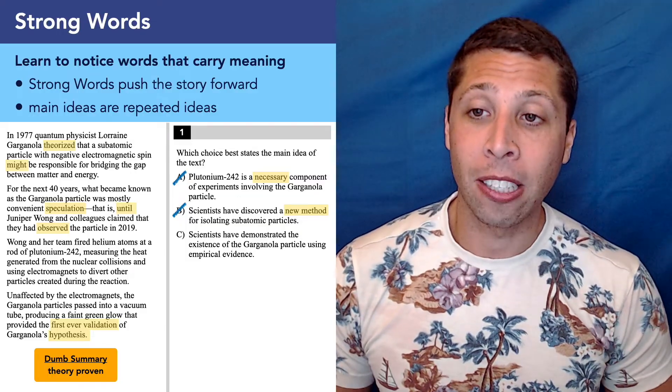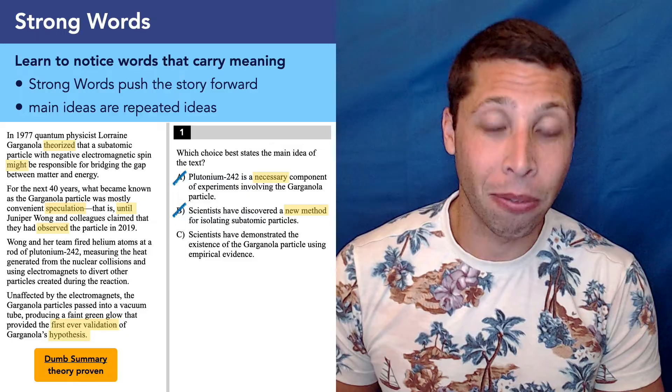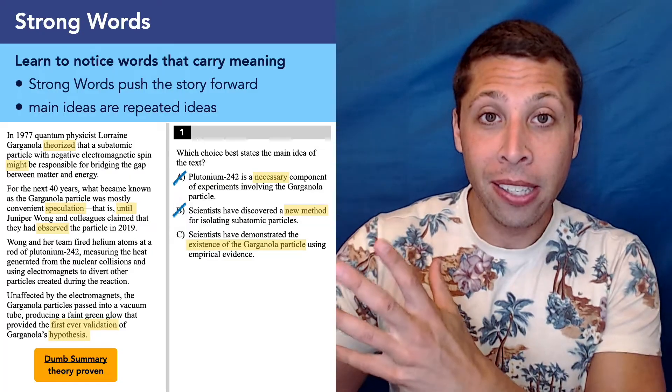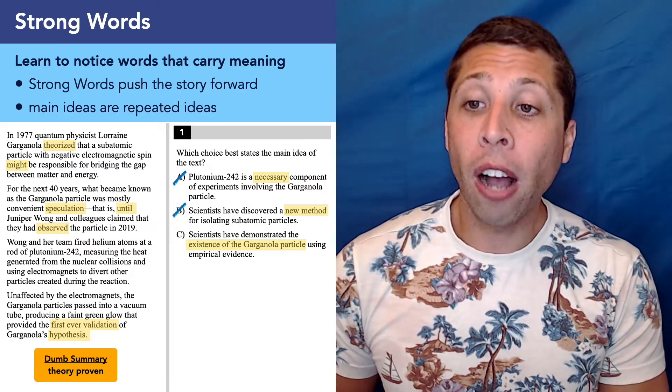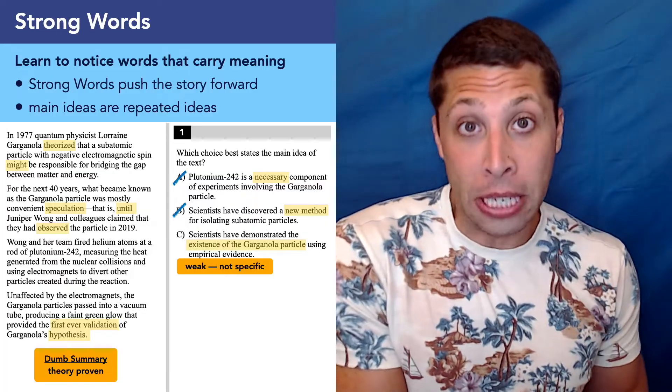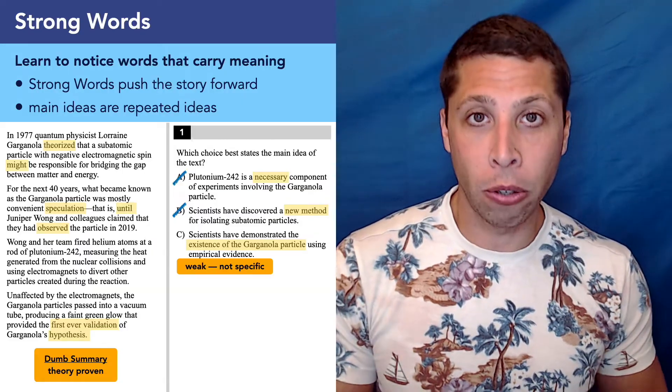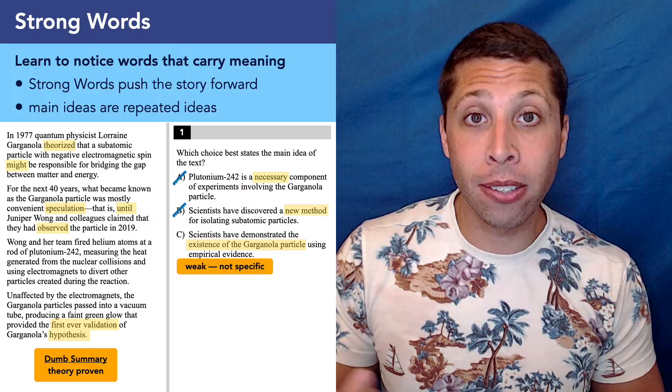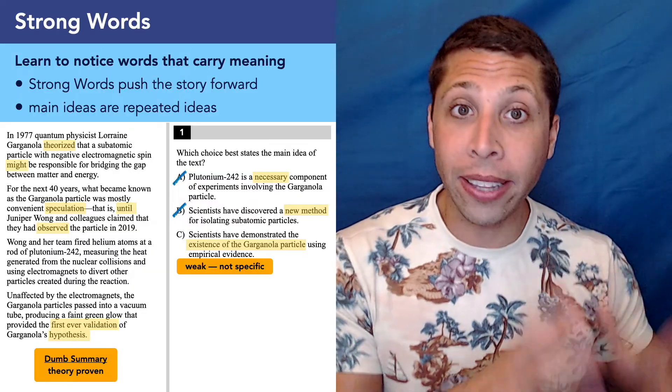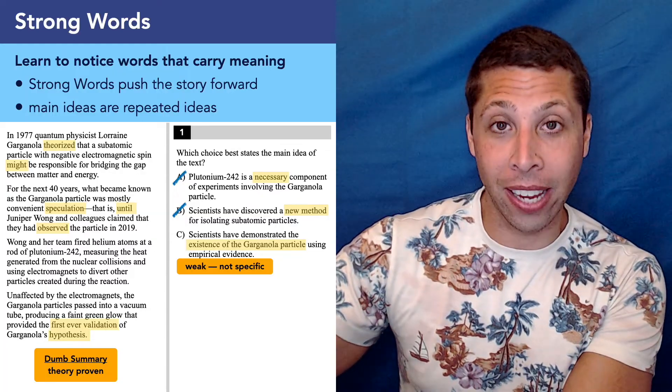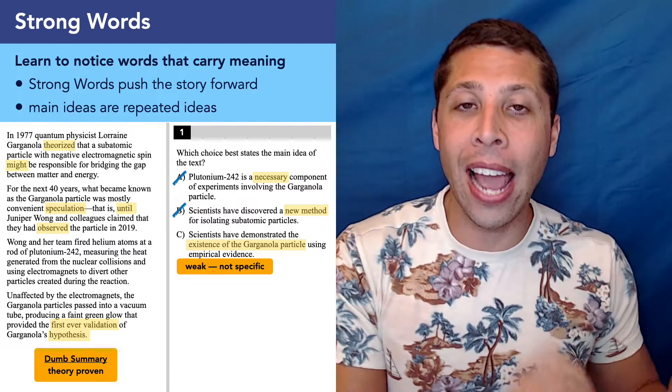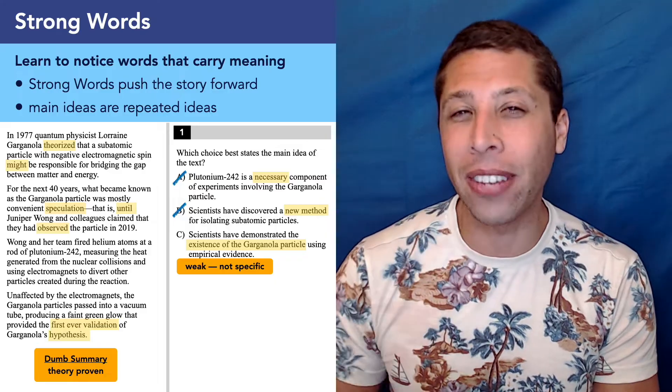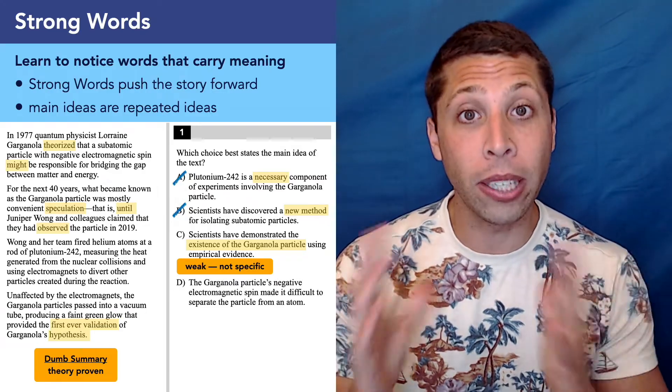So let's look at C. Scientists have demonstrated the existence of the Garganola particle using empirical evidence. Well, it's got some tough words there. Empirical, we might not know, but we definitely can understand the middle part, the existence of the Garganola particle. Well, that matches nicely with our dumb summary. It was a theory, and now they've proven that it exists. So that seems pretty good, but a lot of people are going to be turned off by this choice because it's very weak. It leaves out detail. But weak answers are not necessarily bad, mostly because they're easy to prove. We can find stuff in the passage that does it, even if it's leaving out some of the details.